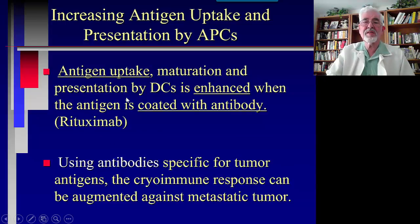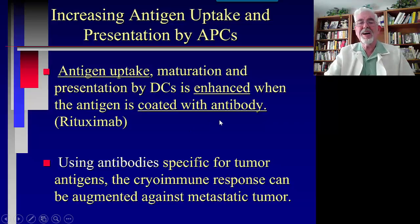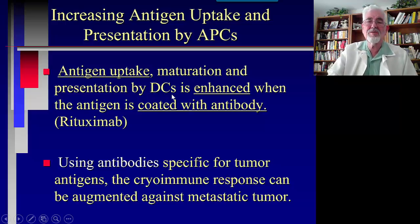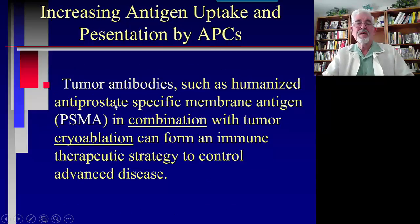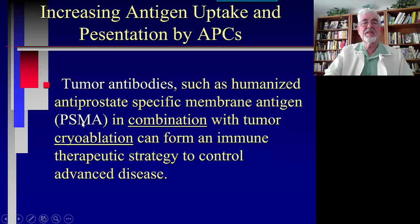Antigen uptake, maturation, and presentation by the dendritic cell is enhanced when the antigen is coated with antibody — demonstrated in breast cancer where adding antibodies to the tumor enhanced the effect when freezing and DCs were applied. Using antibodies specific for a tumor antigen, the cryo immune response can be augmented against metastatic tumor. Tumor antibodies such as humanized anti-prostate specific membrane antigen (PSMA) in combination with tumor cryoablation can form an immune therapeutic strategy to control advanced disease.